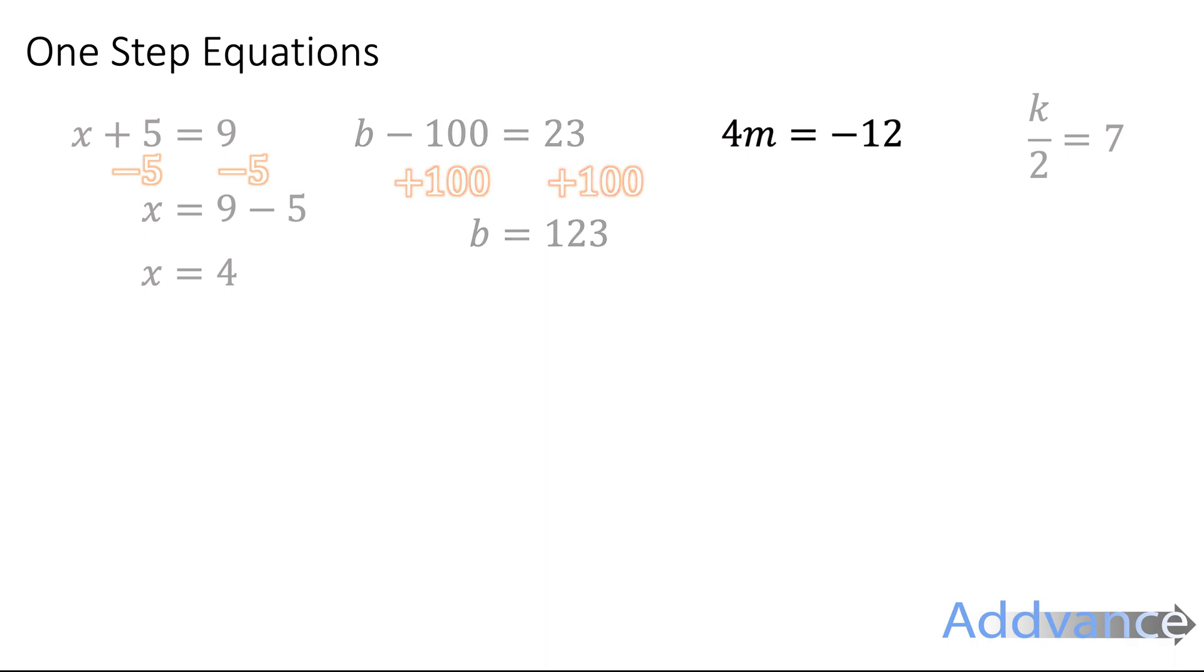Now we've got 4m equals minus 12. The opposite of times by 4 is divided by 4 and we get m equals minus 3. Just remember that 4m means 4 times m.